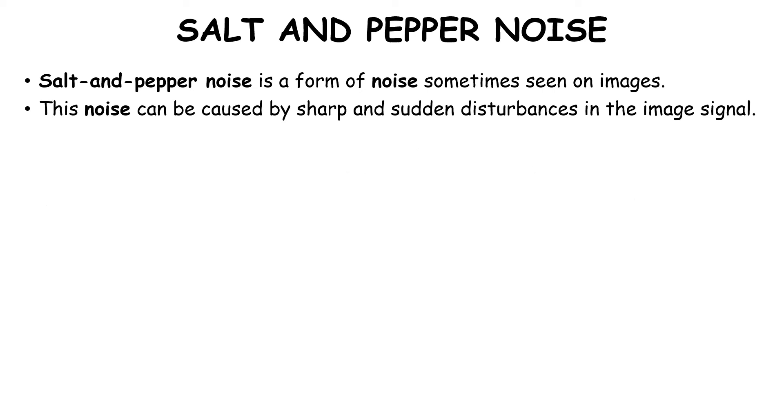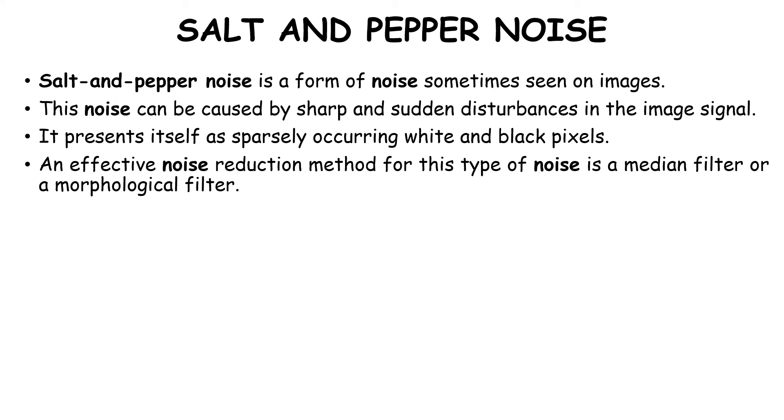The type of noise to be studied while studying filtering is salt and pepper noise. This noise is a form of noise sometimes seen on images, caused by sharp and sudden disturbances in the image signal. It presents itself as sparsely occurring white and black pixels. An effective noise reduction method for this type of noise is a median filter or morphological filter.